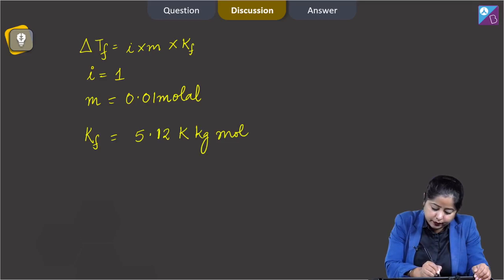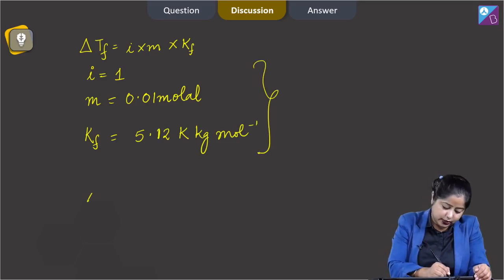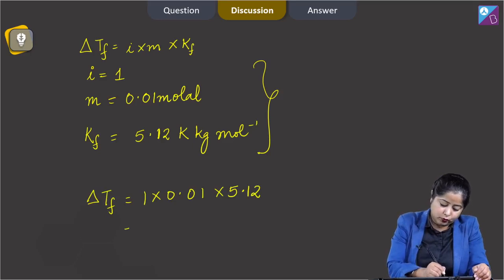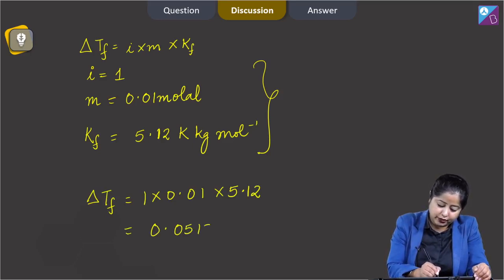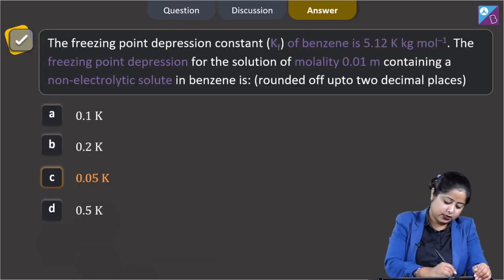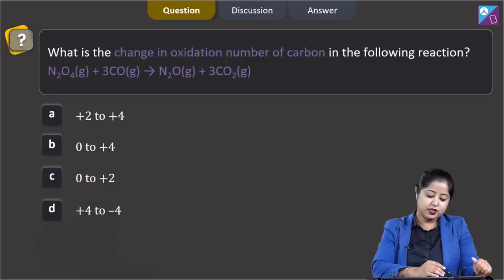Putting the values into the equation: ΔTf = 1 × 0.01 × 5.12 = 0.0512 kelvin, which is approximately equal to 0.05 kelvin. So the correct answer is option C.